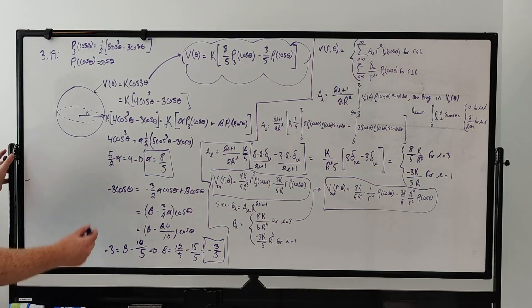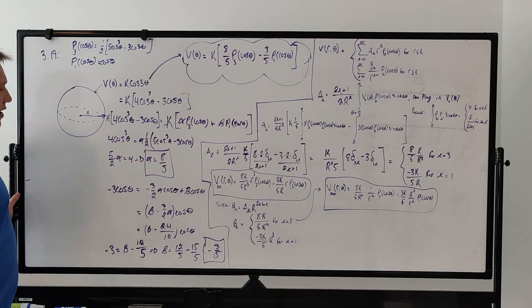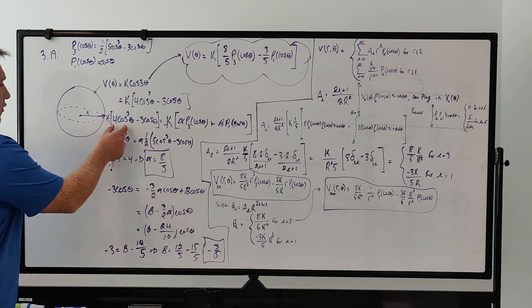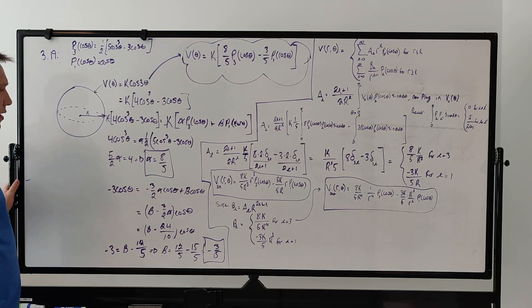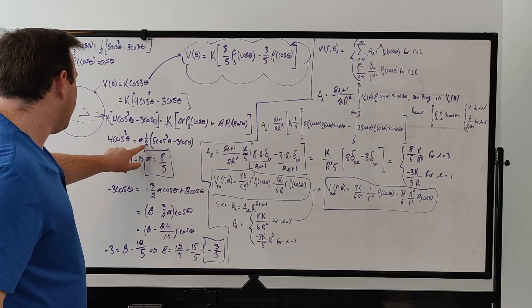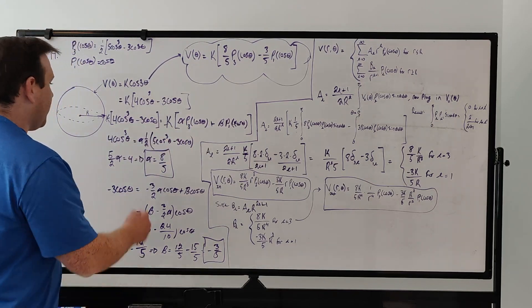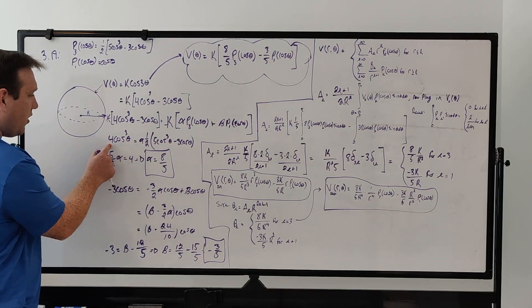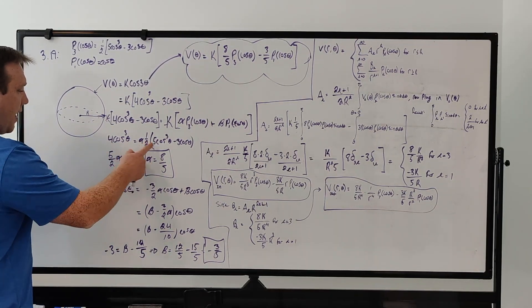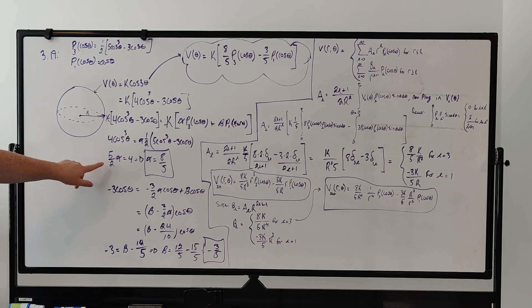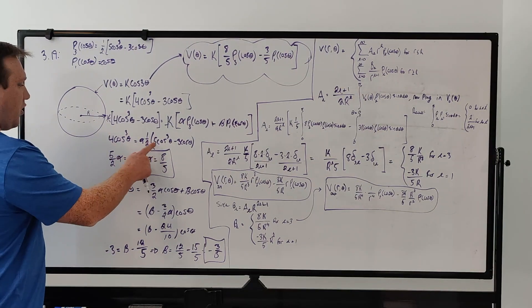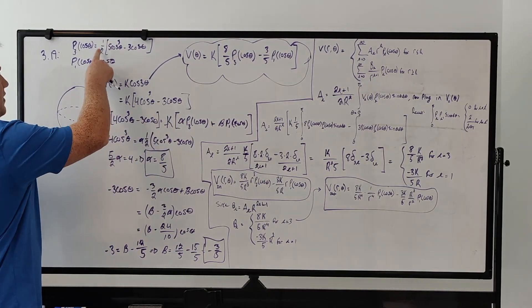How do we find alpha and beta? The k's cancel and we do coefficient matching. For the first term, 4 cosine cubed must equal alpha times P₃, which contains a factor of one-half. So we want 4 to equal alpha times 5/2, meaning 5/2 · alpha = 4. Solving for alpha gives alpha = 8/5. With alpha equal to 8/5, the first term matches.